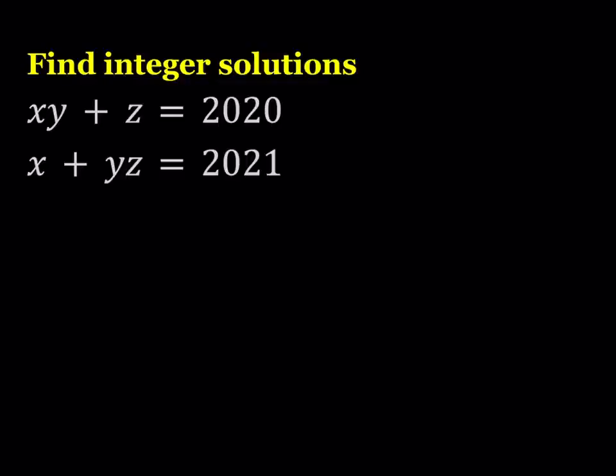Let's take a look at these equations. First thing I notice is that xy and yz are products, and x and z are individual terms. We have two numbers that differ by one, which tells me I should subtract these two equations because that's going to give me one. Let's go ahead and do that.